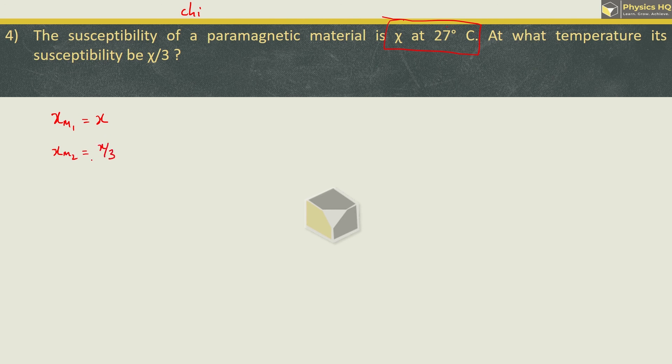So, we have to find which temperature this is happening. Now, you can solve this by remembering that the magnetic susceptibility is inversely proportional to temperature. So, you can write magnetic susceptibility initially upon magnetic susceptibility finally equals T2 upon T1. We need to find T2.